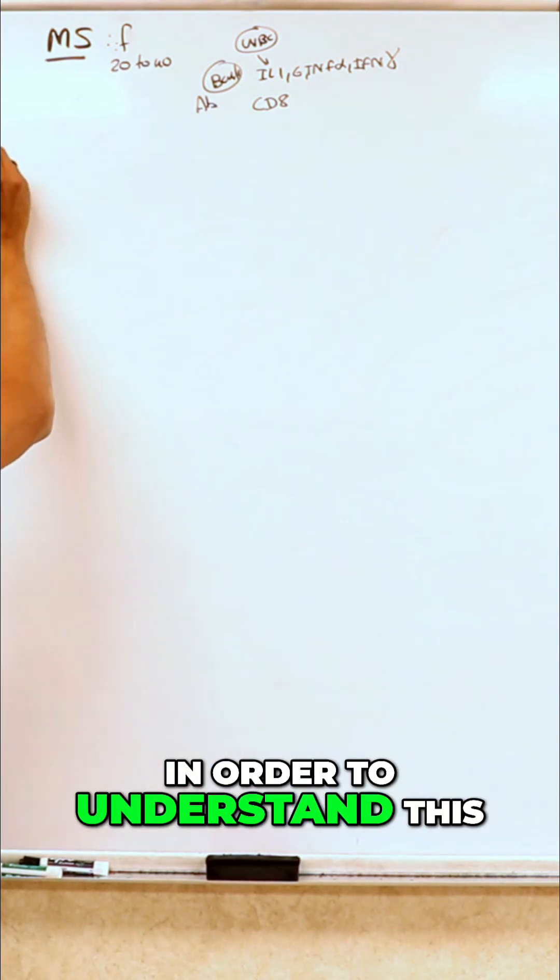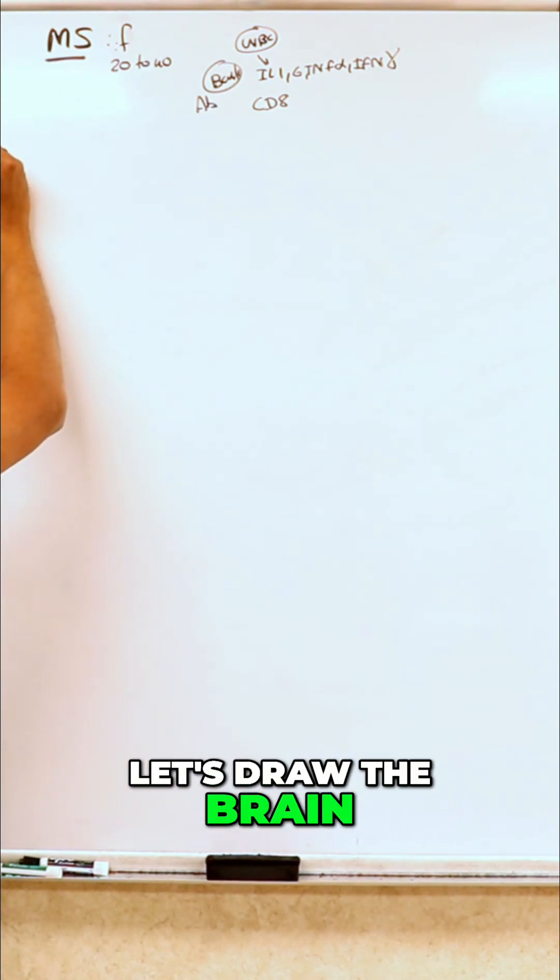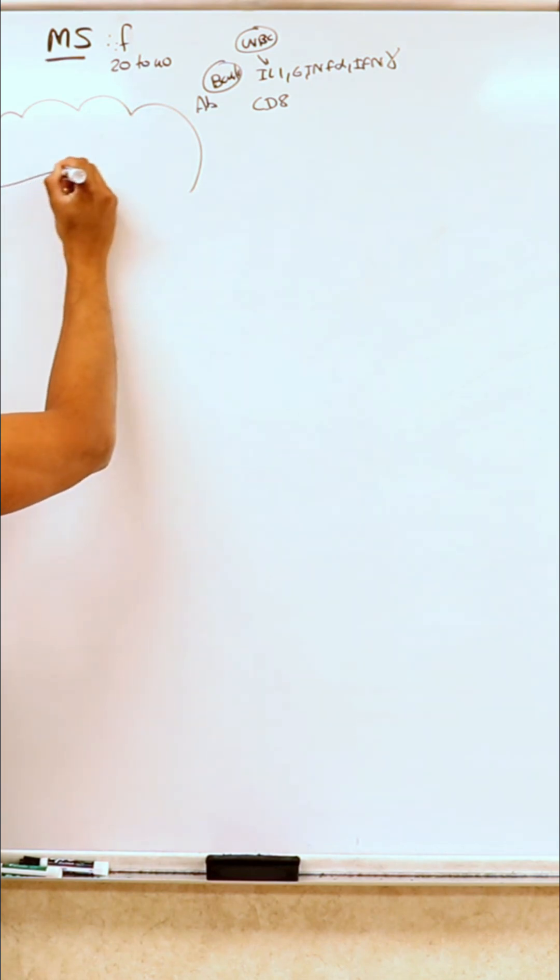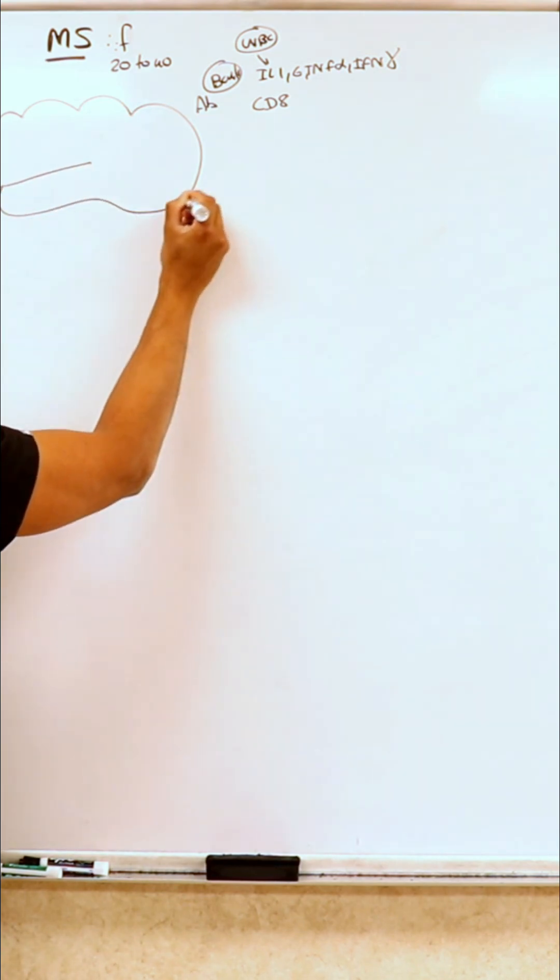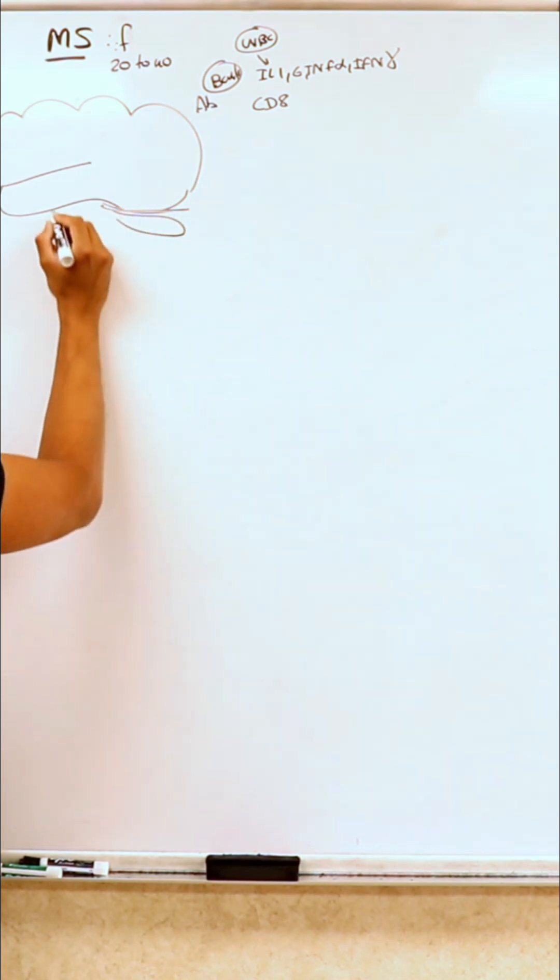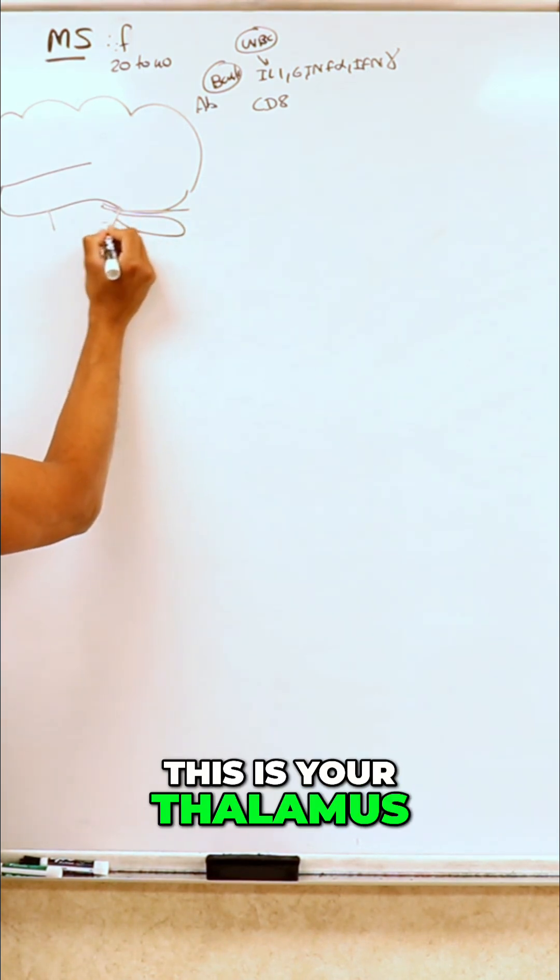In order to understand this, let's draw the brain. This is the brain, this is your tentorium, and I'm going to draw the cerebellum here. This is your thalamus.